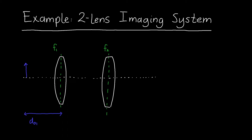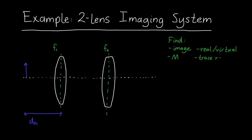In this video we're going to do an example of a two-lens imaging system, and I've designed it so that all of the images and all of the objects are real. We're going to find where the final image is located after it goes through both lenses, the overall system magnification, whether the final image is real or virtual, and we're going to trace some rays through the system to see how to do ray tracing through this type of multi-stage optical system.